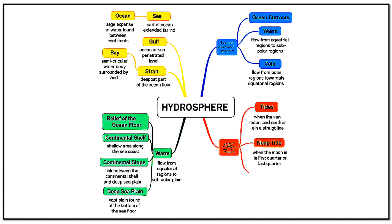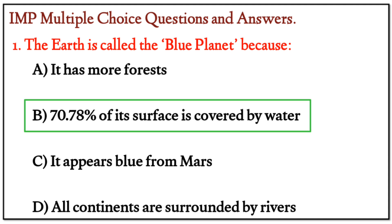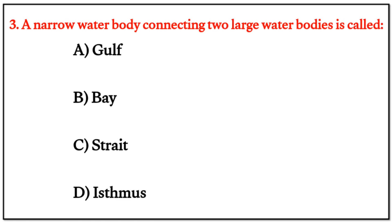MCQ Question 1: The earth is called the blue planet because — the right answer is B: 70.78% of its surface is covered by water. Question 2: Which is the largest ocean in the world? The right answer is D: the Pacific Ocean.